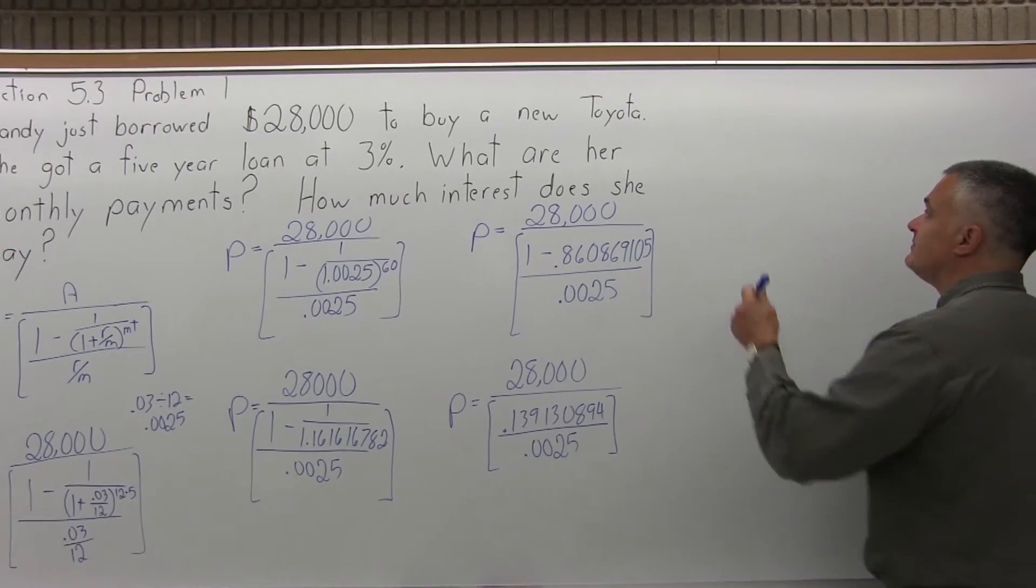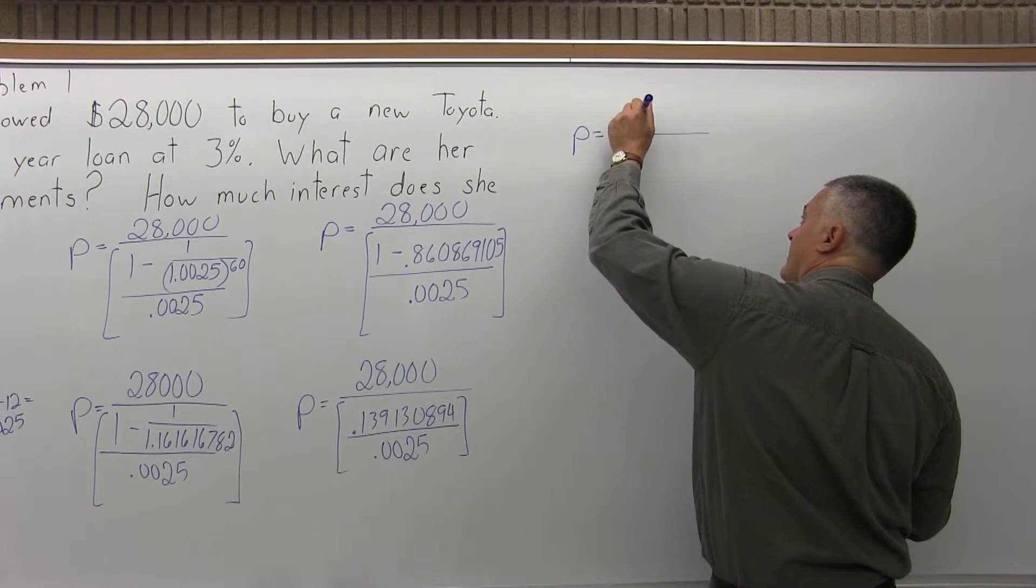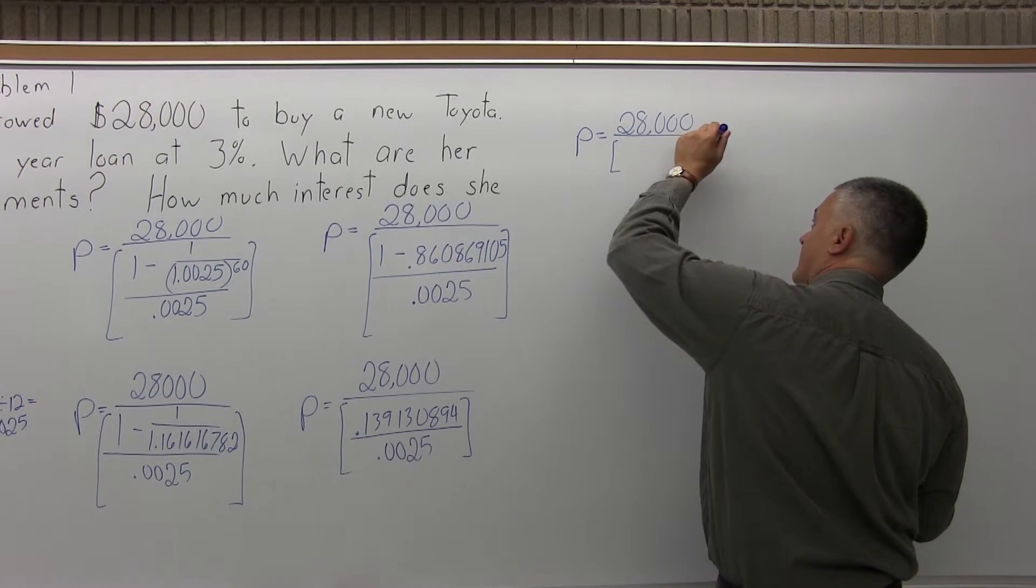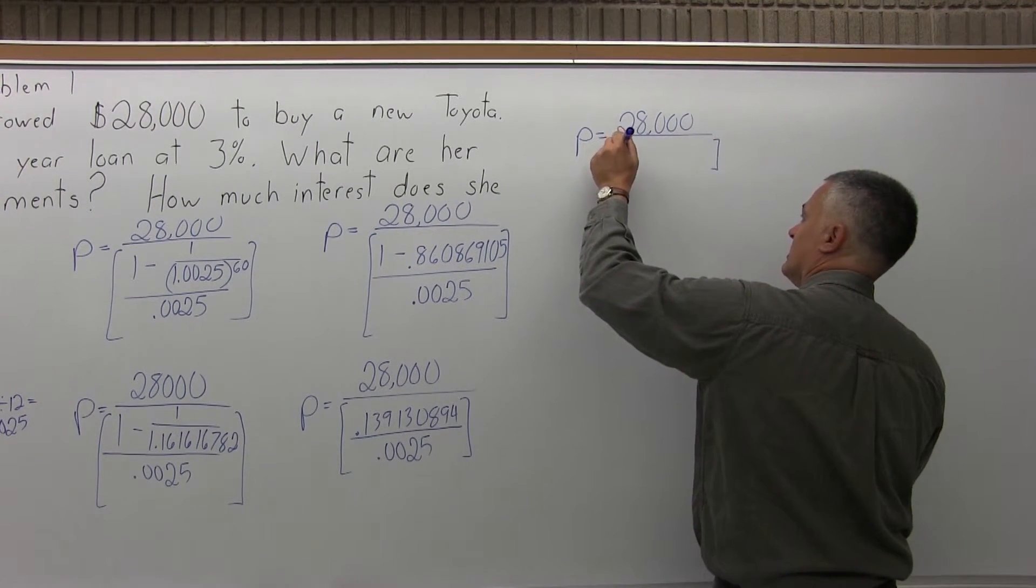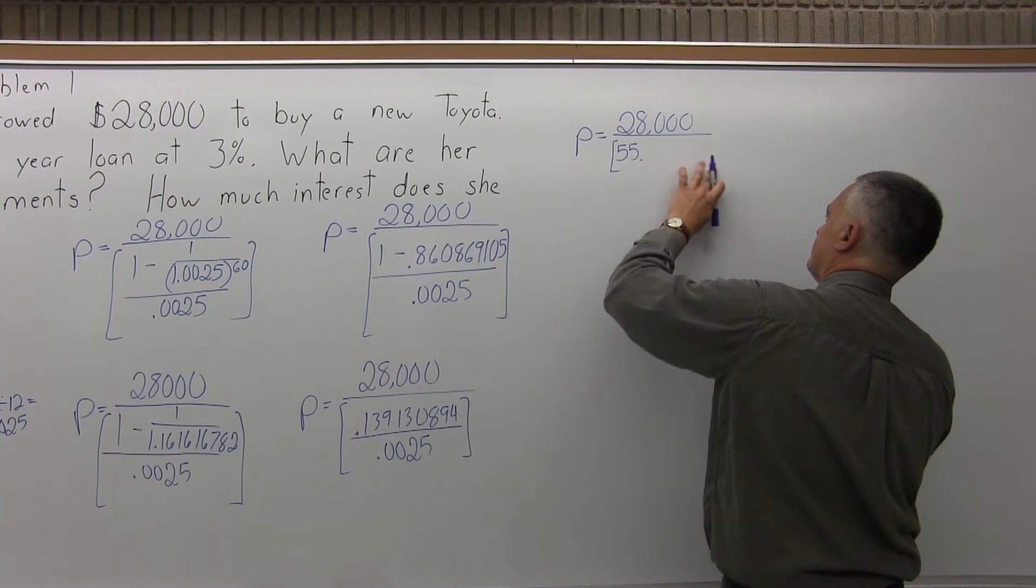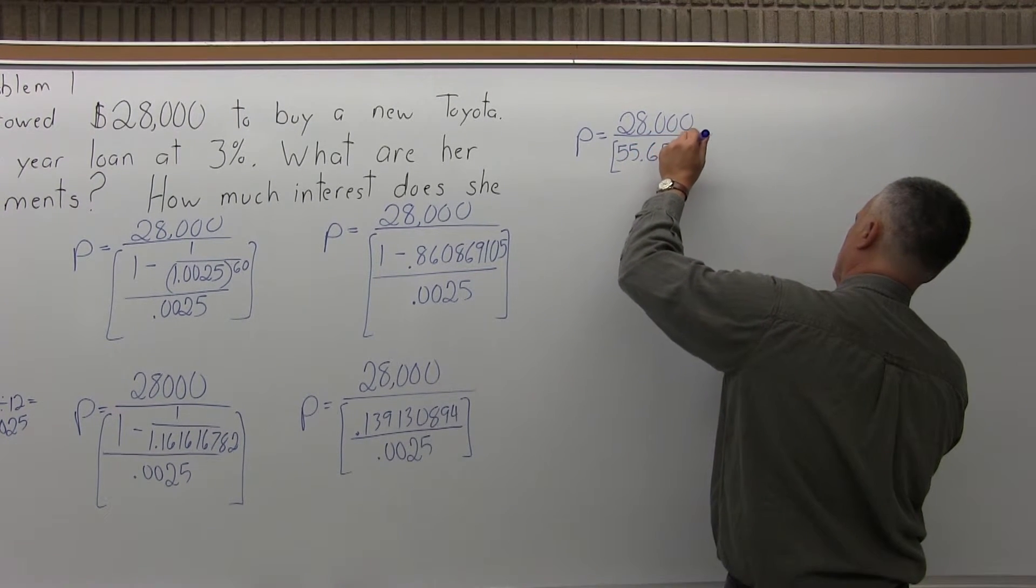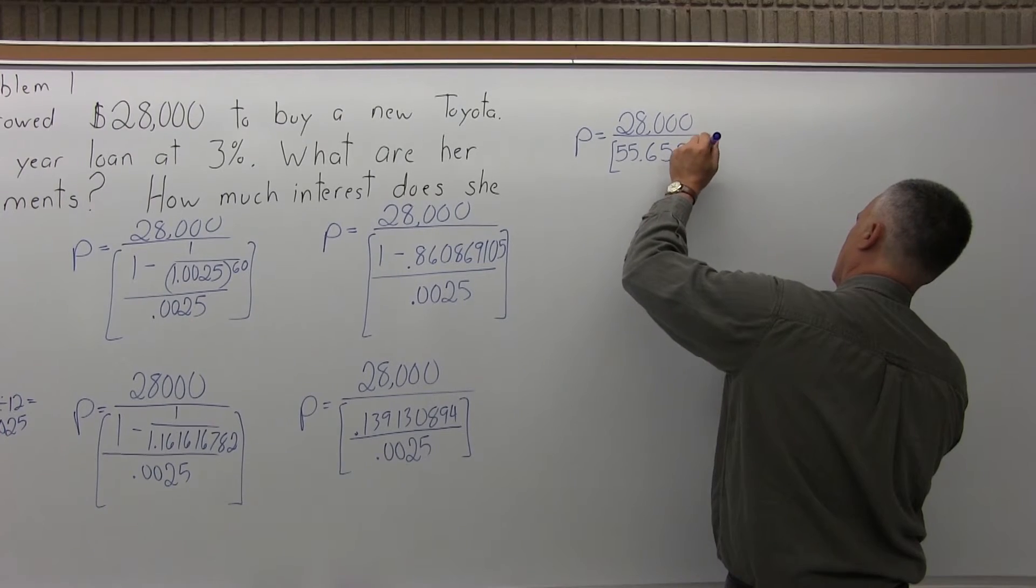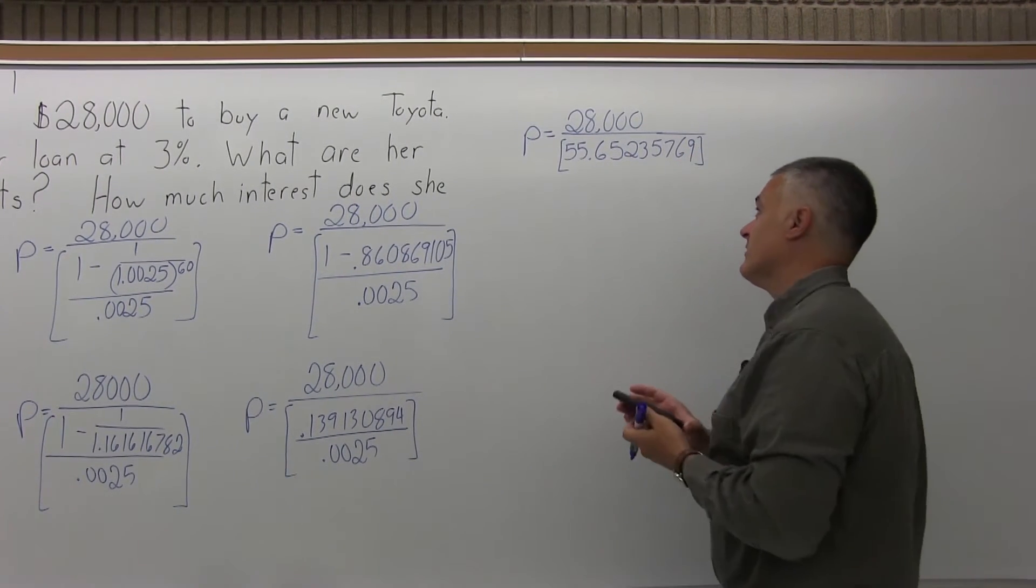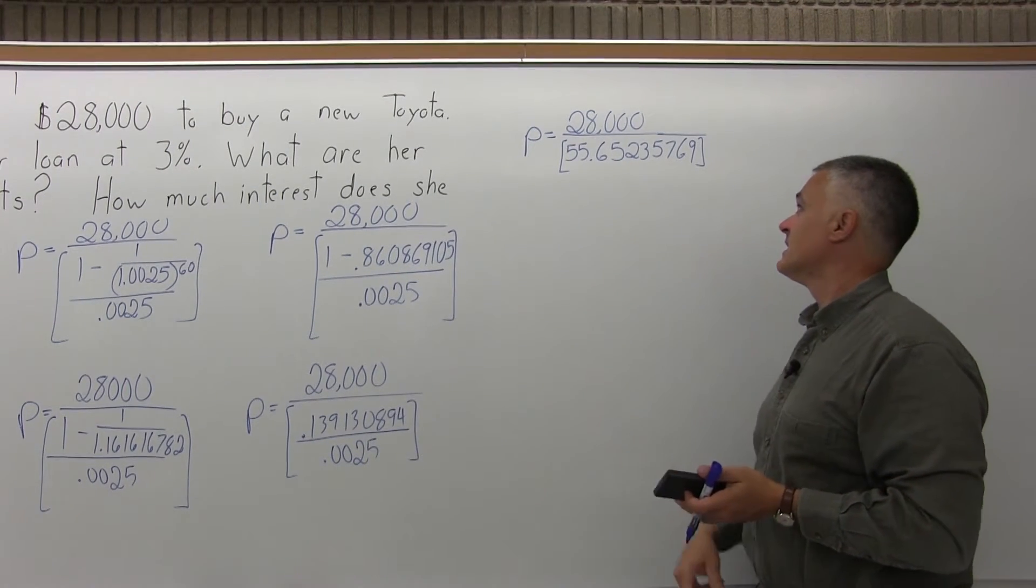And now, I would have P, the monthly payment, is 28,000 divided by the brackets. And at this point, the brackets has one value in it, which is 55.65235769. So to finish this problem to the end, we have to do 28,000 divided by 55.65235769.